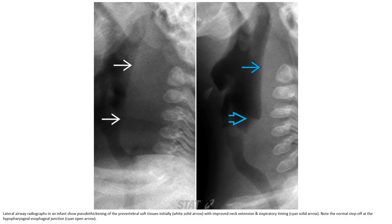This is the lateral airway radiograph in the supine position, showing thickening of the prevertebral tissue initially, with improved neck extension and correct expiration timing. Note the normal step of the retropharyngeal surface direction.